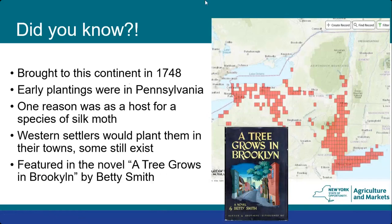Now we'll switch to tree of heaven. It's another invasive species introduced into the United States — brought to North America in 1748, with early plantings in Pennsylvania. Settlers moved it westward looking for fast-growing plants, and it was also thought it would host silk moths, which didn't work out. It's also the tree featured in the novel 'A Tree Grows in Brooklyn,' so some people have a particular affinity to it — but it really is just a nuisance tree in most locations.